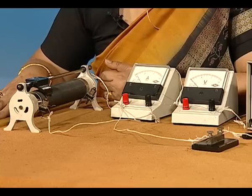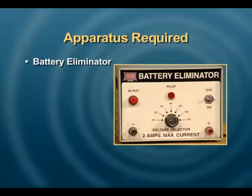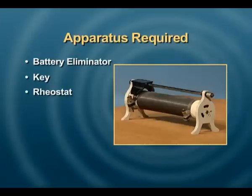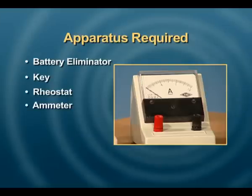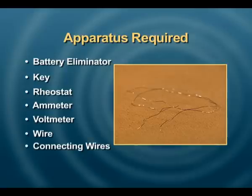We are going to use that rule to find the resistance per centimeter of a wire, using the wire as the conductor in question, and thereafter establish Ohm's Law. We will also try to find the material property of specific resistance of the wire. The apparatus required would be a battery eliminator, a key, a rheostat, an ammeter, a voltmeter, and the wire in question.